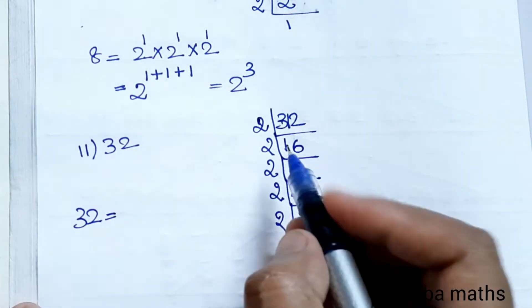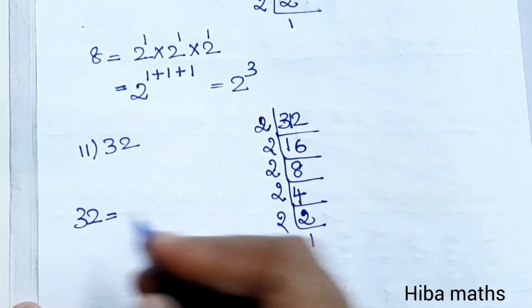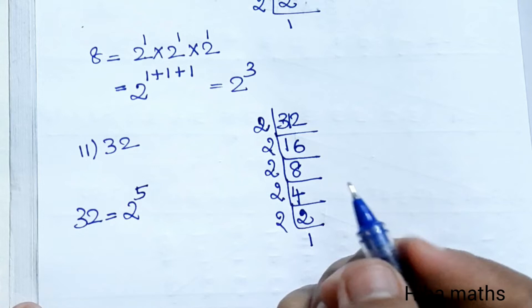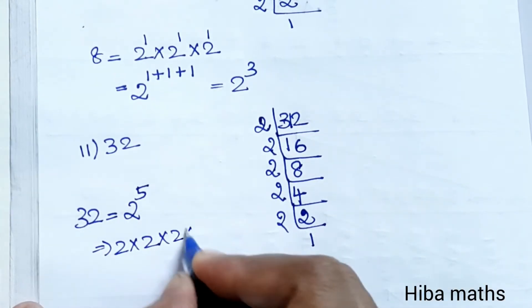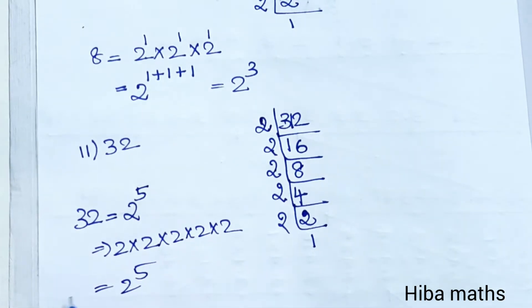So 32 equals how many 2s? Counting: 1, 2, 3, 4, 5. Five 2s multiplied: 2 × 2 × 2 × 2 × 2 = 2^5.